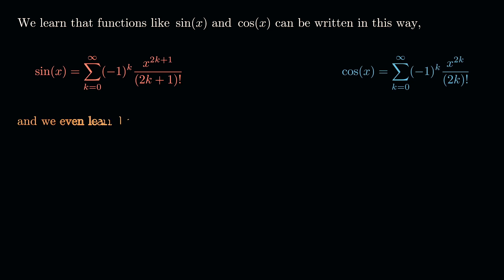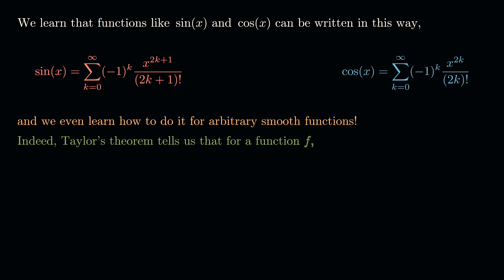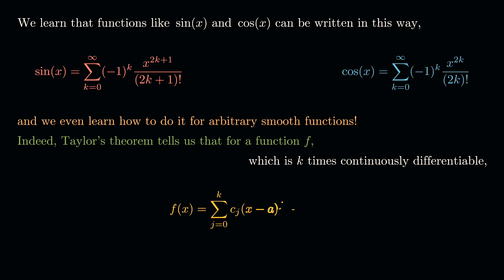For arbitrary smooth functions, we may not sum to infinity — we sum to a finite number and include a remainder term. For example, Taylor's theorem tells us that for a function f which is k times continuously differentiable, we can write f(x) as the sum from j equals zero to k of c_j times (x minus a) to the j-th power, plus some remainder term dependent on k.